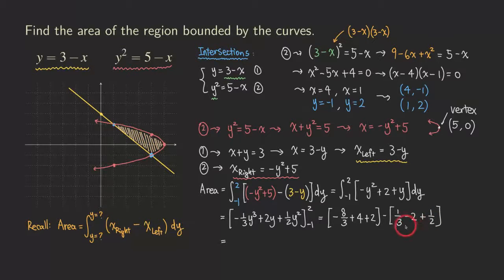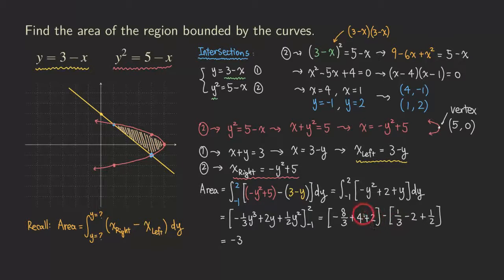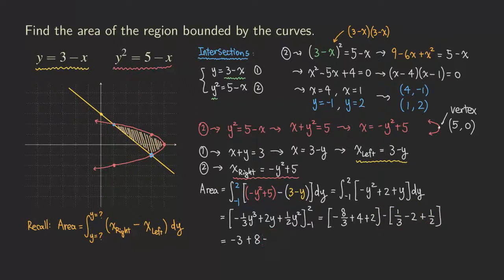Now doing the calculation, paying attention to sign changes: the fraction parts give −8/3 − 1/3 = −9/3 = −3. The integer parts give (4 + 2) − (−2) = 6 + 2 = 8. The half parts give 2 − (−1/2) wait, we get −1/2 − 1/2 = ... combining everything: 8 − 3 = 5, then 5 − 0.5 = 4.5, which is 9/2 or 4.5.